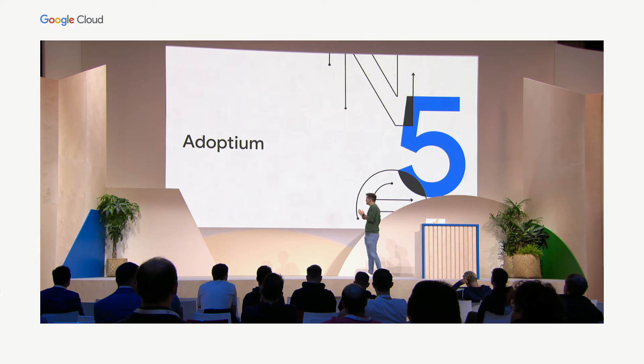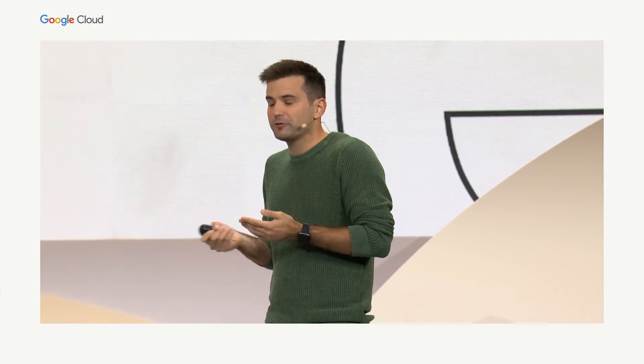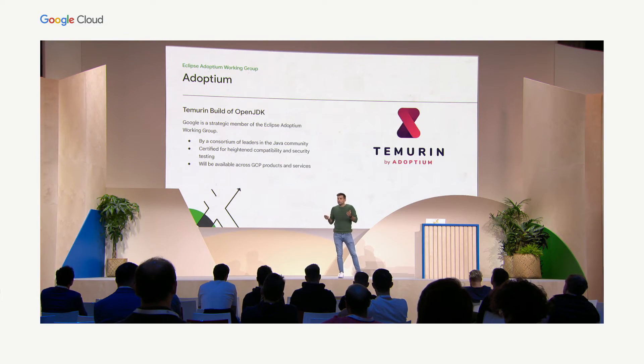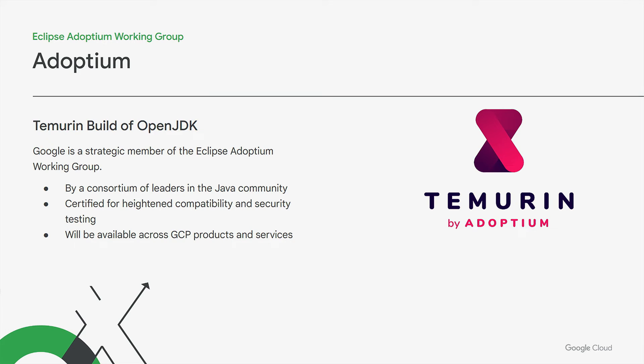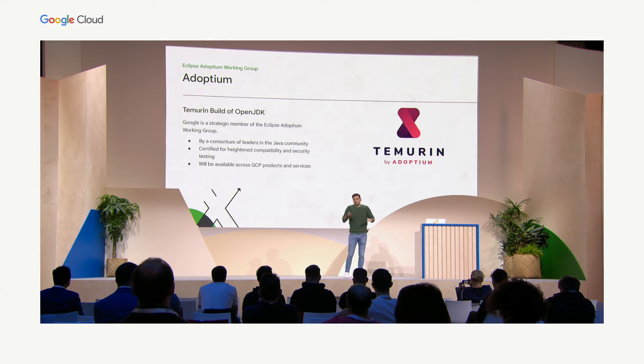Reason number five is an announcement we're making at Next: Google Cloud has joined the Eclipse Adoptium working group. Eclipse Adoptium is a consortium of Java leaders behind the Temurin build of Java. Temurin has become really popular in recent years — it's one of the most-used JDKs with the highest standards of security and compatibility. Very soon, you'll be able to use the Temurin build in all of our serverless products, including Cloud Functions and App Engine, as the JDK behind your Java application.